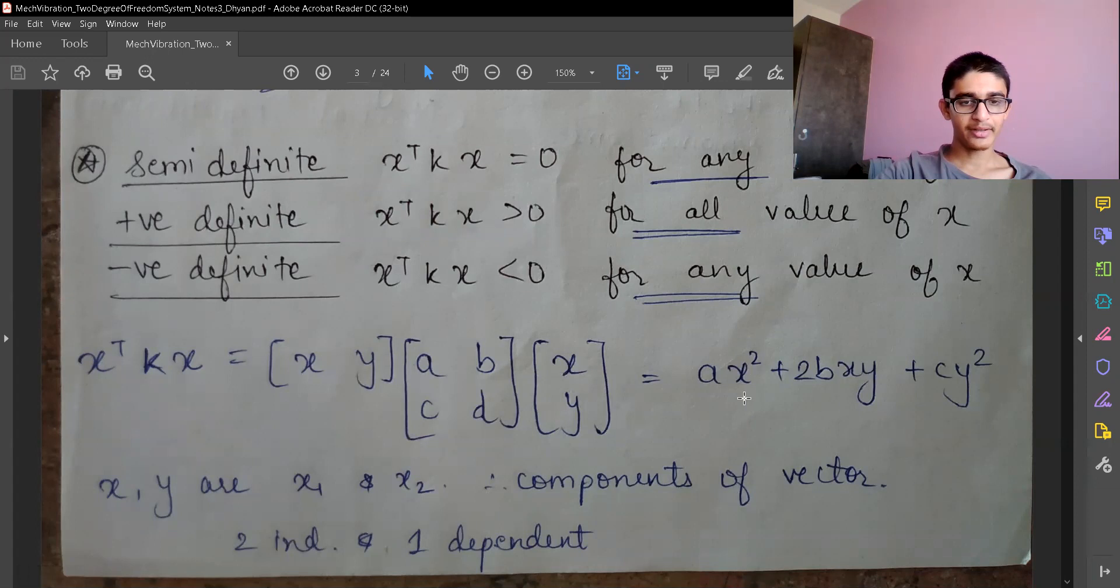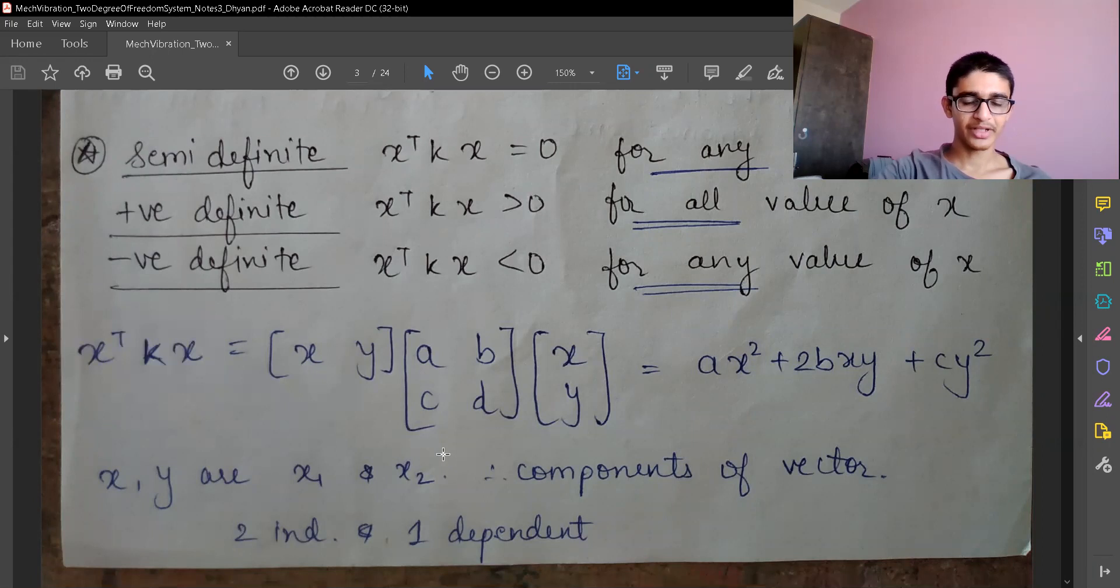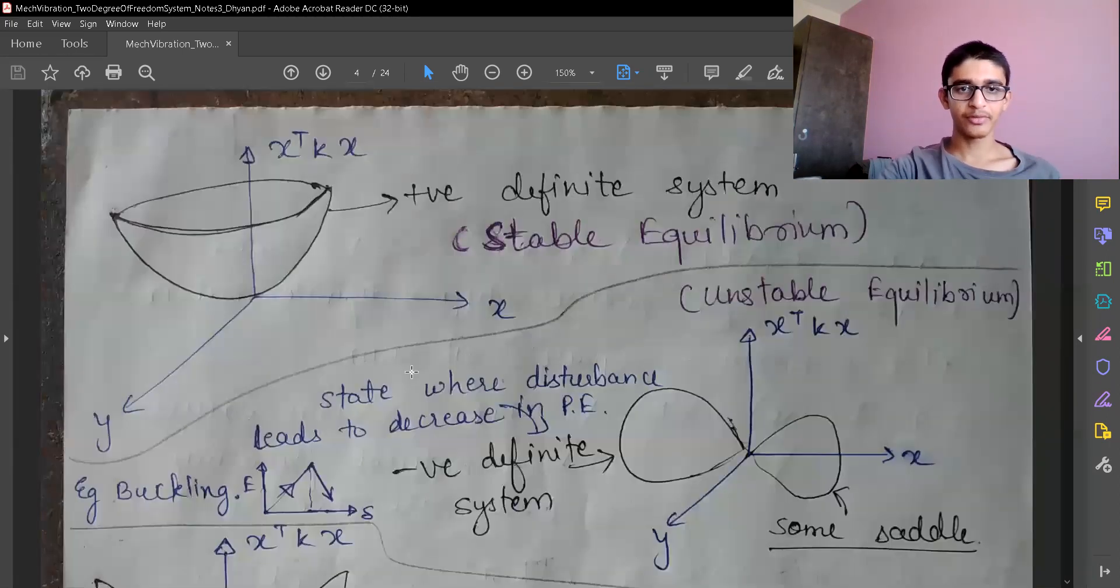We can make some 3D graph out of this where X and Y are two unknowns and Z is the known value. Z equals AX square plus 2BXY plus CY square. So we have drawn it over here.